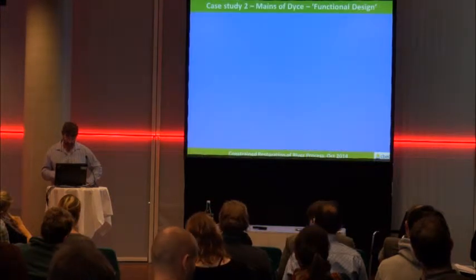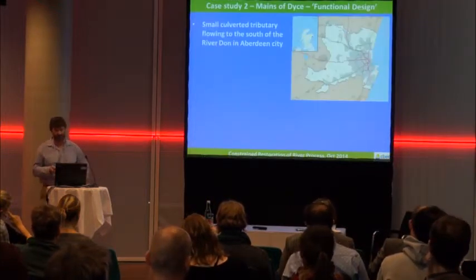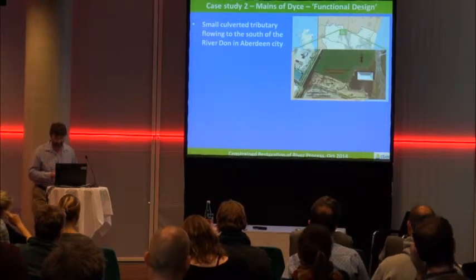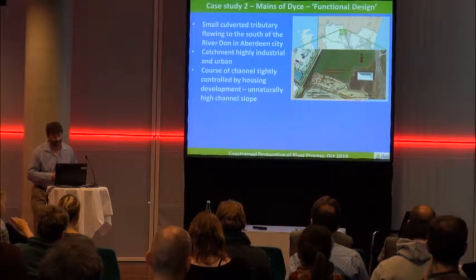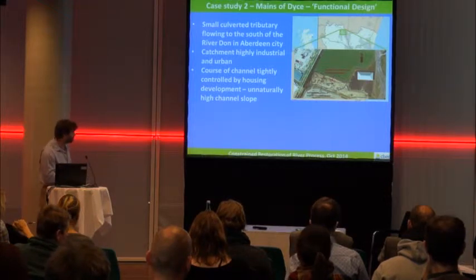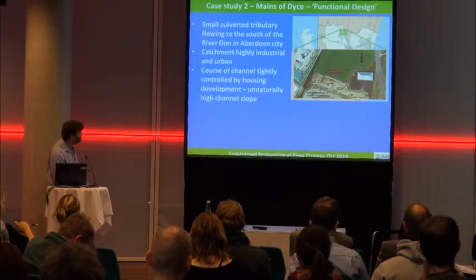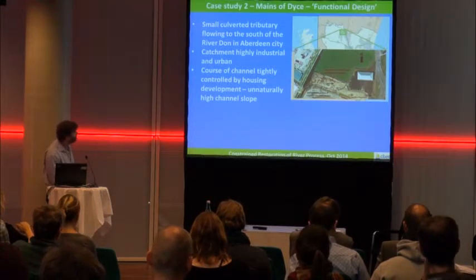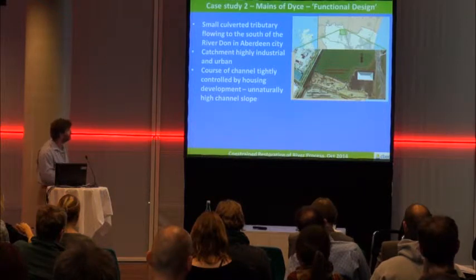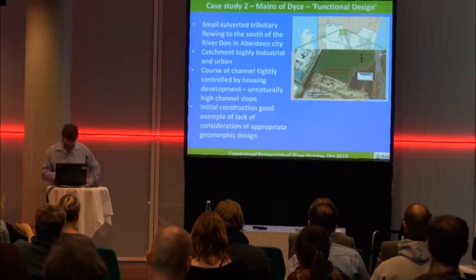The next case study, with greater constraint, is a functional design example - Mains of Tice, a small culverted tributary of the River Don in Aberdeen City. It's a highly urbanised and industrialised catchment, and the footprint available for the site is very much constrained. The river had been culverted underneath an industrial site, which was then developed for housing. Because of the housing footprint, the channel position was absolutely fixed. This provides a good example of how failure to consider geomorphic process in initial construction resulted in failure.